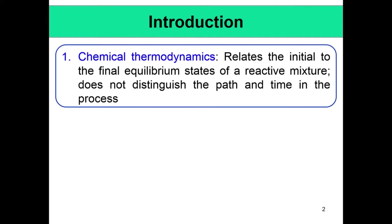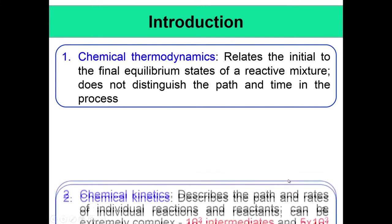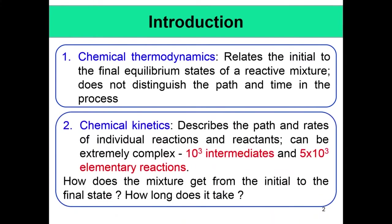But it did not tell you about which path it took — why the path is important will become apparent very shortly — and the time it took for the process to happen. Thermodynamics never tells you about the path; it tells you about the initial and the final states. Often the path of the process is very important, and that is where chemical kinetics comes in. Chemical kinetics describes the paths and the rates of the individual reactions and reactants.